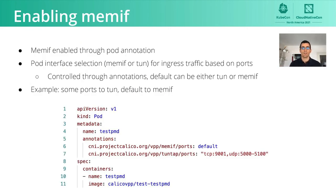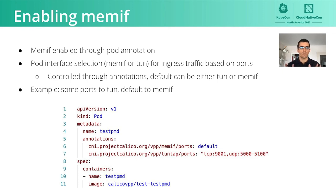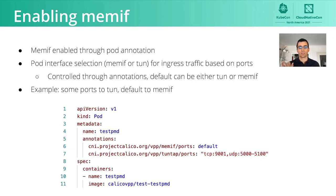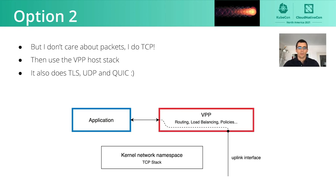Here's an example of a trivial application using gomemif that you could run in a pod. The API to send and receive packets on an interface is quite simple — there's a read packet and write packet method, and you get the packets in byte slices. This is a trivial example that just swaps the source and destination IP addresses. If you want to enable a MEMIF interface in a pod, you simply add an annotation in the pod definition. Since there is also a Tun interface that can send traffic to the pod, VPP needs to know where to send the incoming packet — either to the Tun or to the MEMIF — and this is done based on destination ports specified in the annotations.